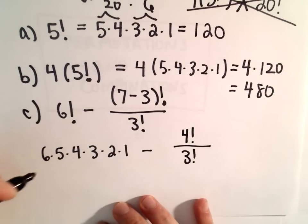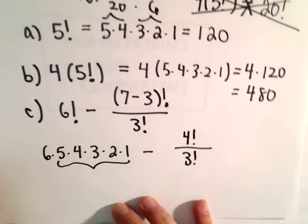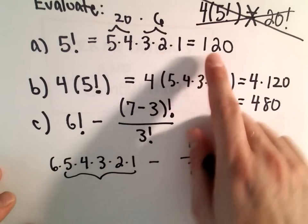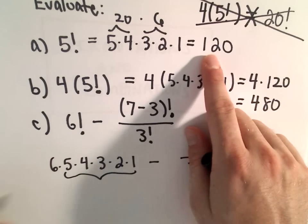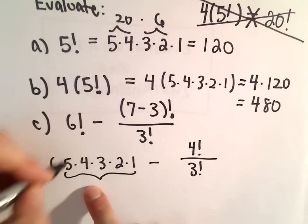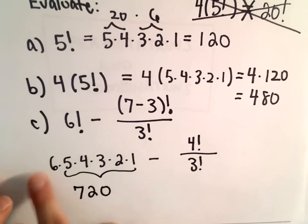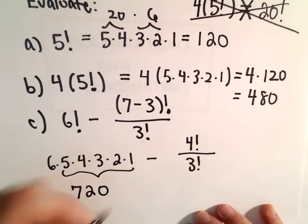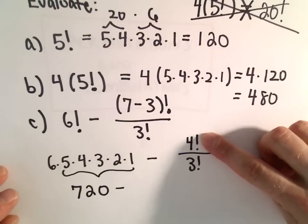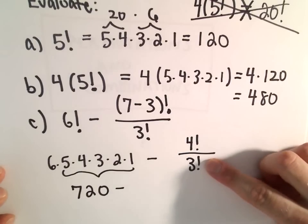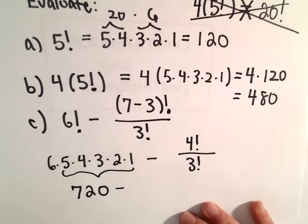Well, let's see. We can always simplify this. We've seen that 5 times 4 times 3 times 2 times 1, that's equal to 120. So, if we take 6 times 120, 6 times 120 is going to be 720. So, again, if you multiply those all out, you'll get 720. You could calculate 4 factorial, calculate 3 factorial, and then simplify it.